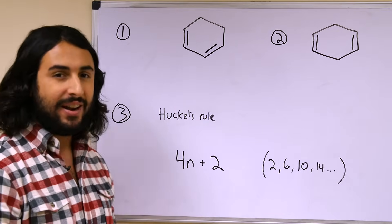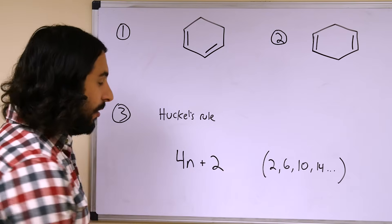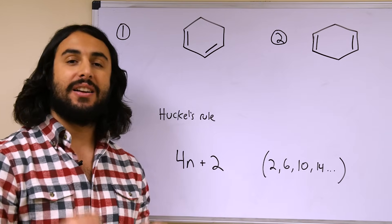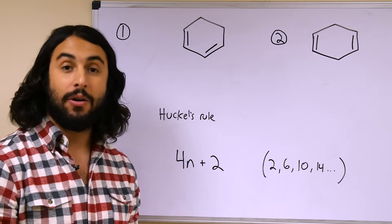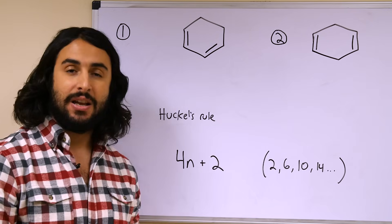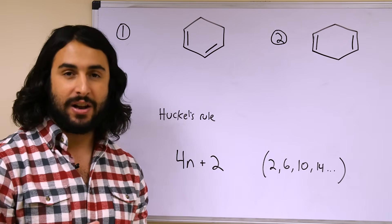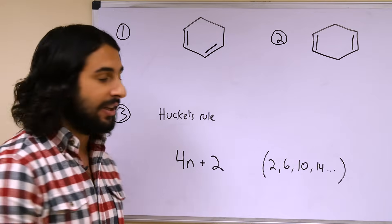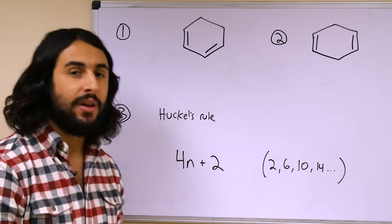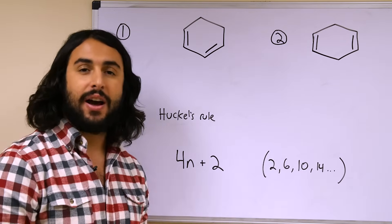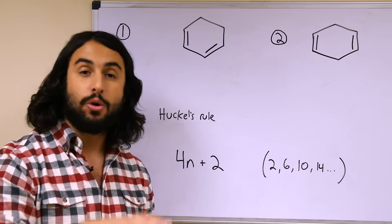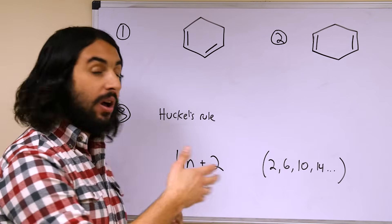Hückel's rule is as follows: we have this term 4n + 2, where n could be any integer, and for whatever integer you put in, it spits out a value for the number of pi electrons that are delocalized that will generate an aromatic system. Let's put in any integer — let's say 0. If n equals 0, 4 times 0 plus 2 equals 2. That means a system with 2 pi electrons could be aromatic. Let's put in the number 1: then we'll have 4 plus 2, or 6. That means 6 is the number of pi electrons in the system that could promote aromaticity. So we end up with 2, 6, 10, 14, and so forth. Those are the values that allow for aromaticity. So 4, 8, 12, etc. — even if the molecule is fully planar and fully conjugated — will not be aromatic.